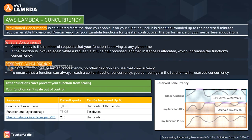All functions in the same region without reserved concurrency share the pool of unreserved concurrency. For example, if the limit is 10, all 10 represents unreserved concurrency. Without reserved concurrency, other functions can use all available concurrency space, which is problematic because it prevents your functions from scaling up when needed.